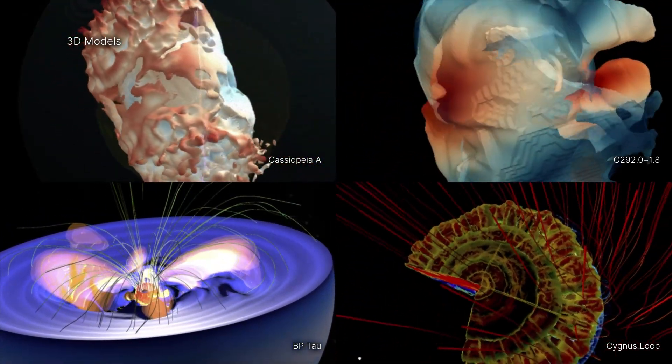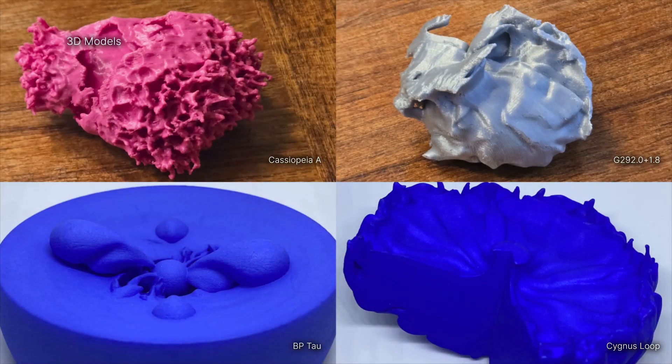These 3D models allow people to view and print examples of stars in the early and end stages of their lives.